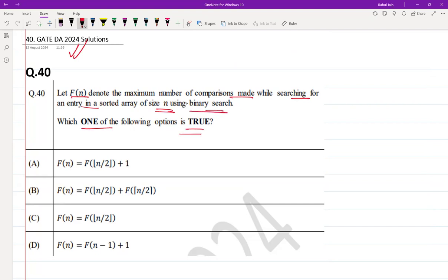If you look at option A, F(n) equals F(n divide by 2) floor value plus 1. So this correctly models the binary search process because at each step in this particular option, one comparison is going to be made and the problem is reduced to searching by half.